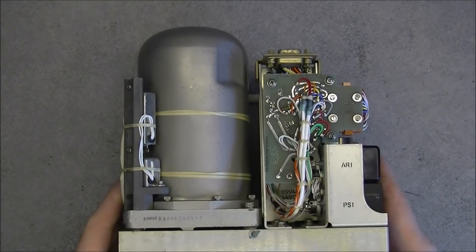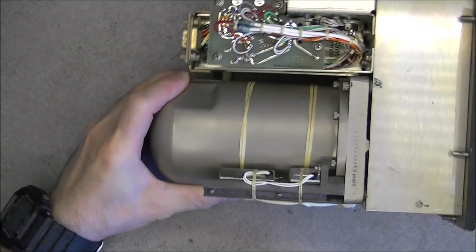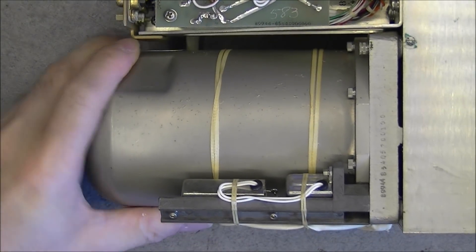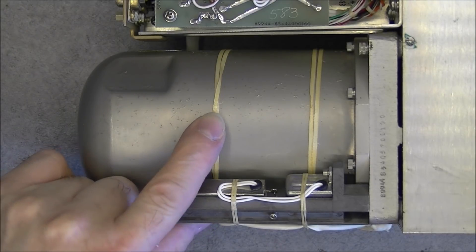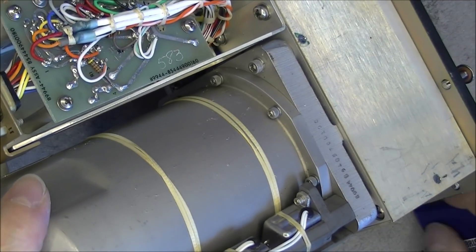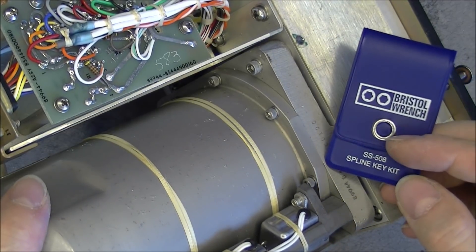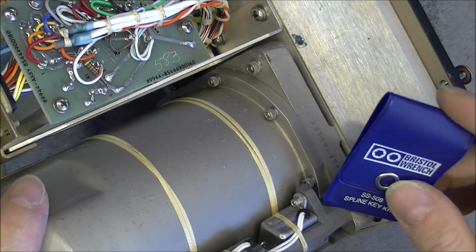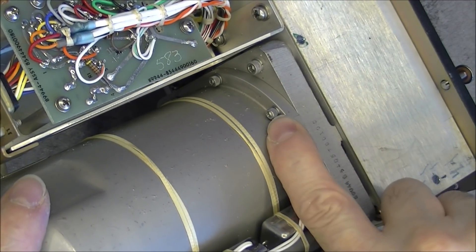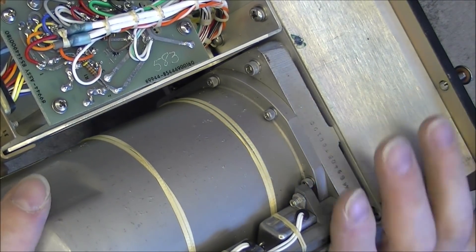On the back we have this compartment I will open later. So sadly I will not be able to take much of it apart because of two reasons. First I do not want to damage the original work of cable lacing. And secondly we have here Bristol spline screws that will not fit my Bristol spline key set. My biggest key is not big enough for this.